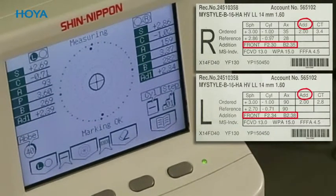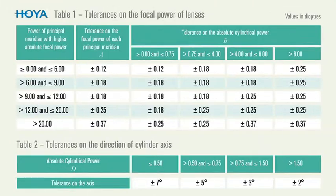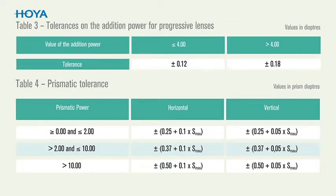All ophthalmic lens manufacturers have to deliver lenses within ISO standards. This means a small difference between the measured values and the printed reference power values is allowed and to be expected.